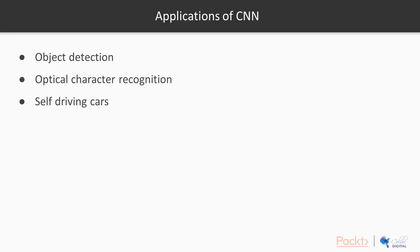Some really important and popular applications of CNNs include object detection, which is used in a lot of domains. Another is optical character recognition — the conversion of text found in an image to digital editable text. And the most popular one is self-driving cars, which use multiple cameras to figure out their surroundings and drive themselves automatically.